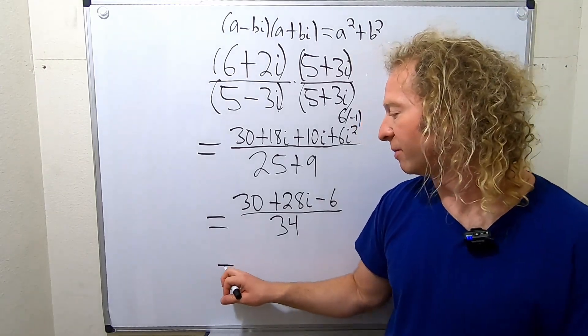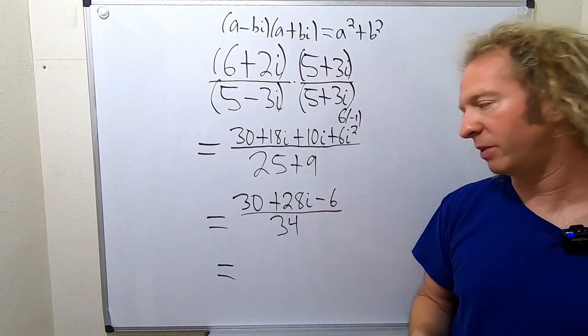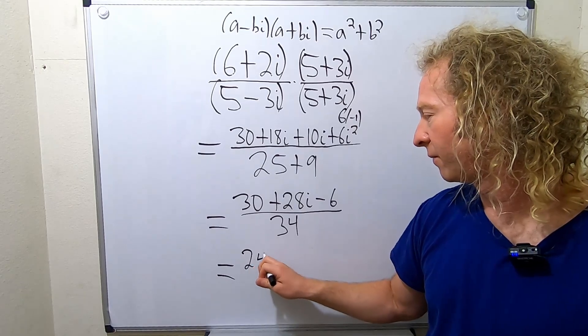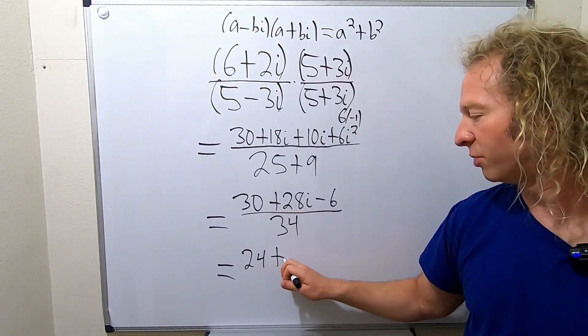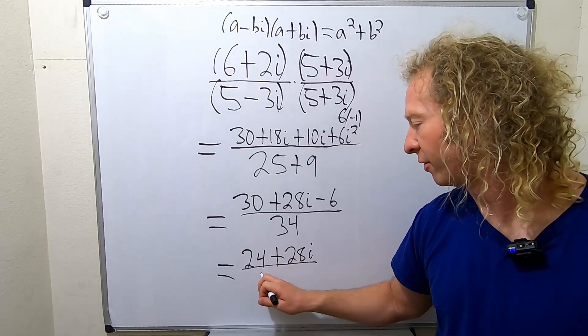We're almost there. So this is going to be equal to 30 minus 6, it's going to be 24. And we have the 28i, so plus 28i. Beautiful stuff. All over 34.